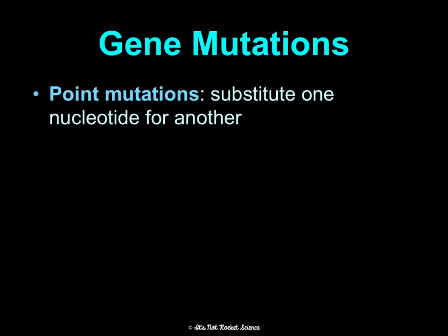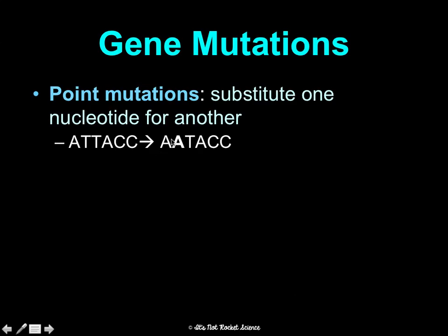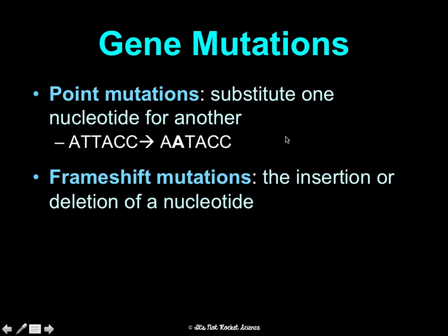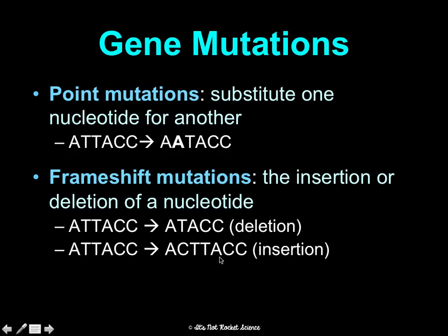For gene mutations, two types we'll talk about are point mutations, which is substituting one nucleotide for another — so it should say A-T-T-A-C-C but instead would say A-A-T-A-C-C, switching one letter. This is how cystic fibrosis, a pretty serious genetic disorder, is caused by one letter being changed. Whereas a frameshift is adding or deleting a nucleotide. We call this frameshift because when we do protein synthesis, we read it in threes, so deleting or adding a letter messes up the entire reading frame and pretty much every amino acid in the protein. This tends to be a bigger mistake than a point mutation.